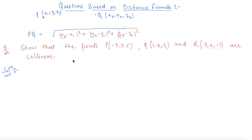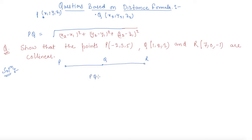The question asks us to show that points P, Q, and R are collinear. Collinearity means they lie on a single line. To prove collinearity, the condition that must hold is: PQ plus QR equals PR.